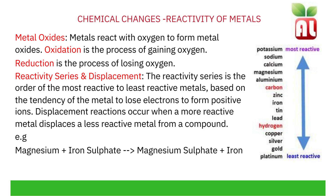The reactivity series and displacement. The reactivity series is the order of the most reactive to the least reactive metals, based on the tendency of the metal to lose electrons to form positive ions. Recall that metals react to try to get a full outer shell of electrons, and metals do this by losing electrons. Displacement reactions occur when a more reactive metal displaces a less reactive metal from a compound. For example, magnesium plus iron sulfate forms magnesium sulfate plus iron. Iron in this reaction is less reactive than magnesium and is hence displaced.